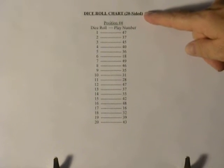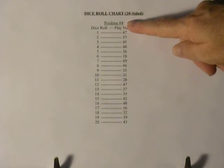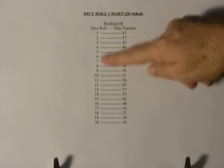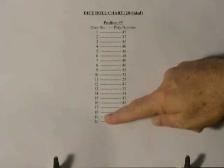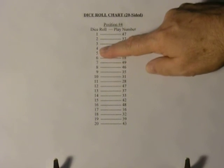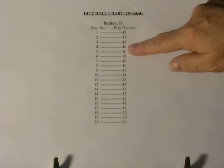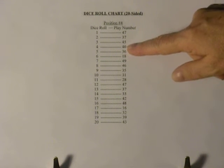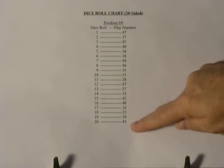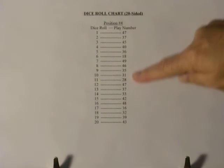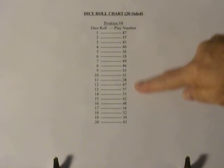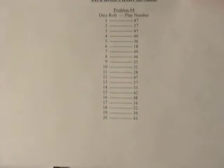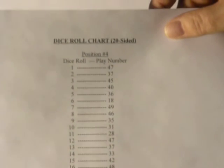There's the dice roll chart, 20-sided, for position four. Again, your dice roll column goes one to twenty. You roll the dice and get four. You go across and there's forty, so you put down forty for your play number. The play number column contains the statistically better numbers, and they are strategically placed there. Here's a closer look.